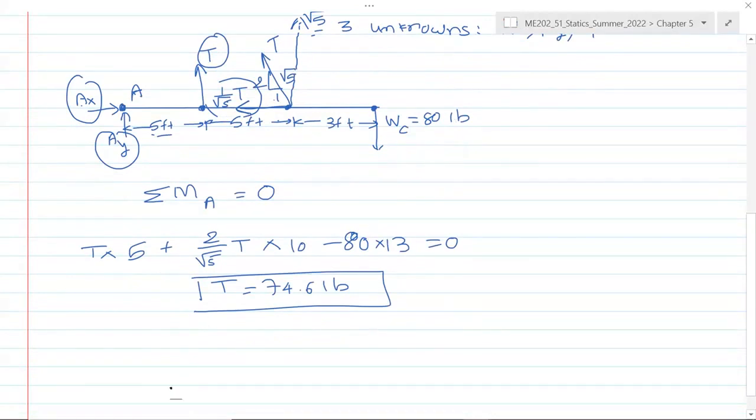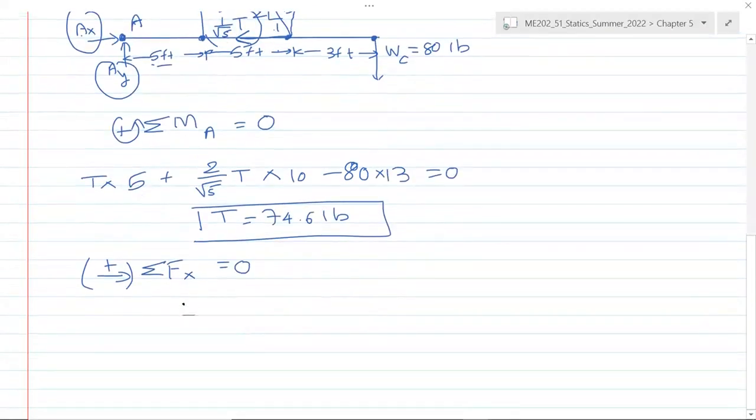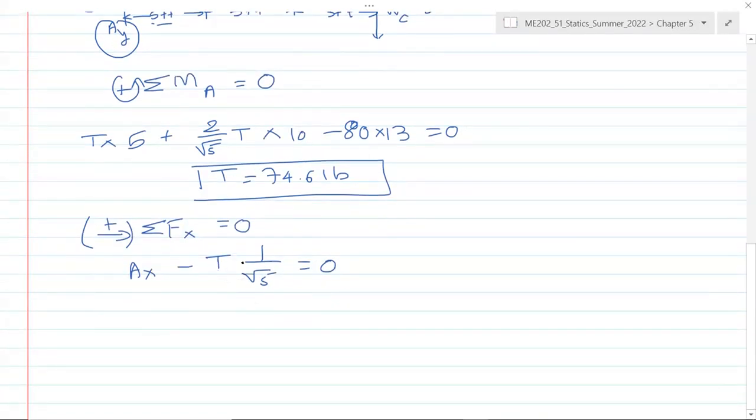Now once we get T, we can easily apply either of those remaining equations. When we apply sum of forces in x direction, by the way we should have used the sign convention that going right is positive. Sum of the forces about x equal to zero, that's our second equation of equilibrium. The horizontal forces are Ax going right, but then this component which is going left, and that is equal to zero. Now T is no longer unknown, we have already solved for that, so we can substitute this number here, 74.6. So Ax will be 61.3 pounds, and we get the positive number, that means this assumption of Ax going right is correct.